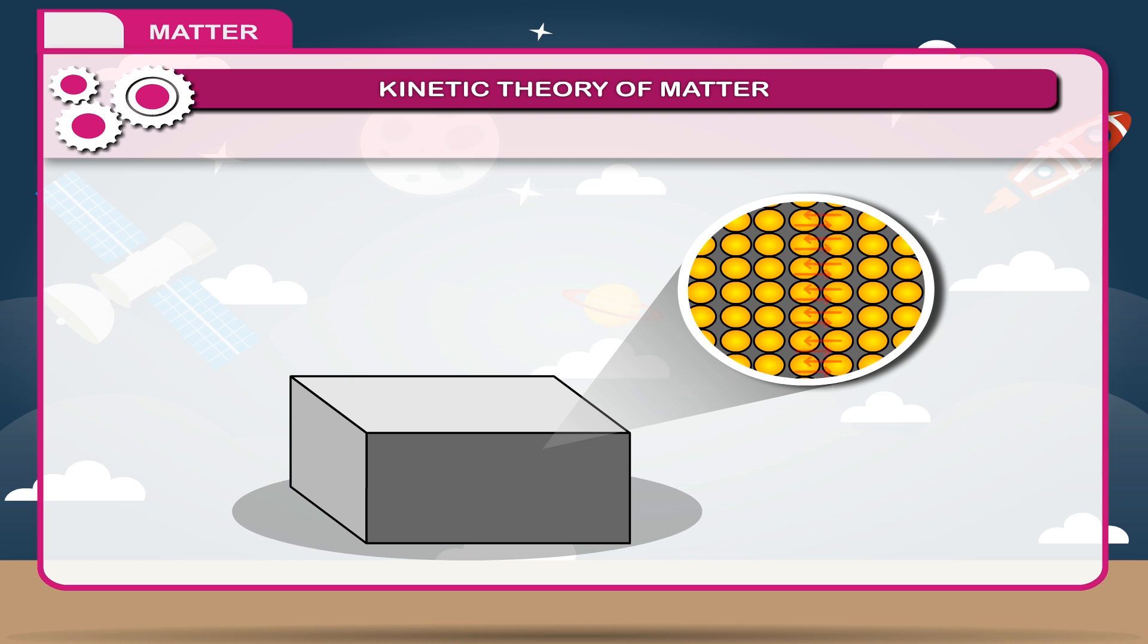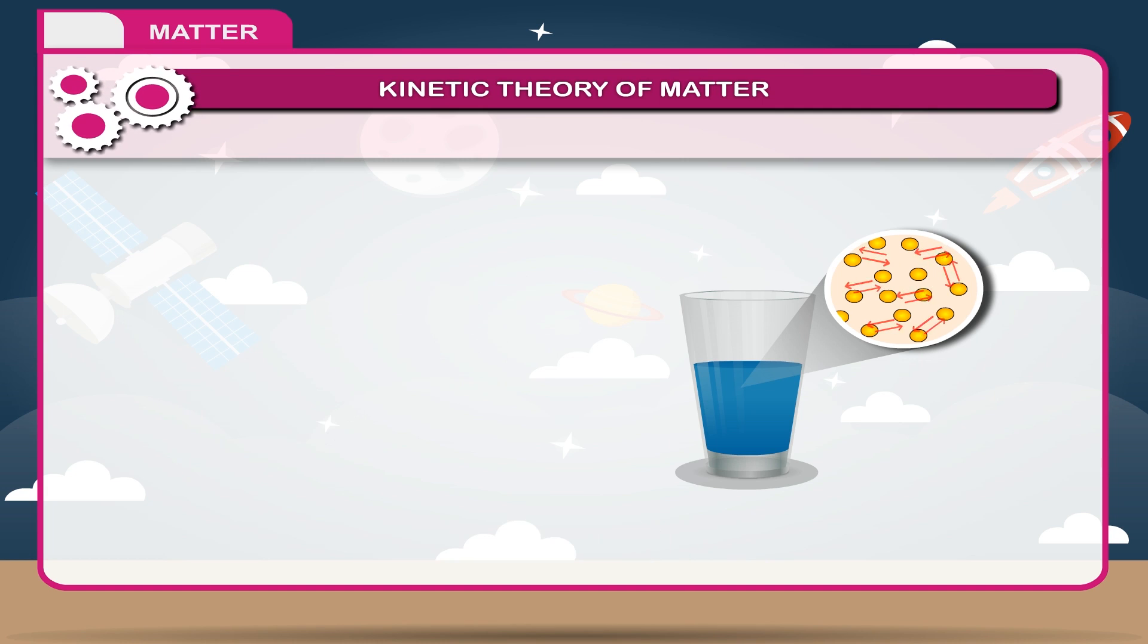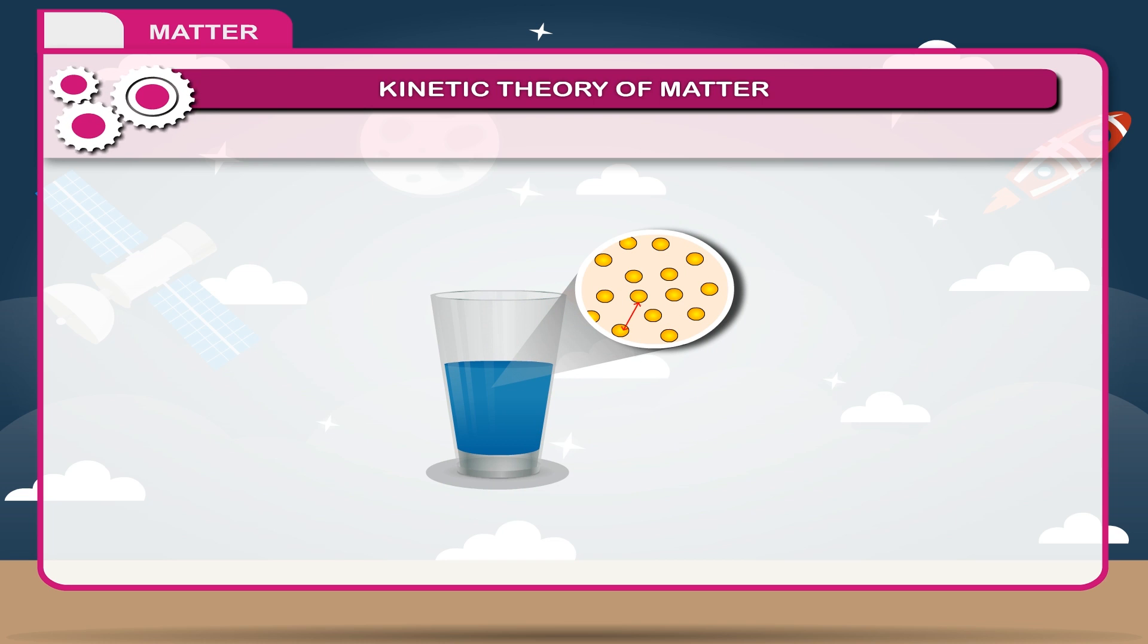4. The molecules of a matter always attract each other. The force of attraction between the same kind of molecules is called the force of cohesion. The force of cohesion is helpful in keeping the molecules of the substance together. The force of attraction between the different kind of molecules is called the force of adhesion. 5. The distance between the two molecules is known as intermolecular distance.